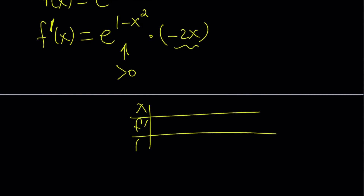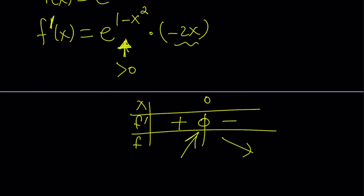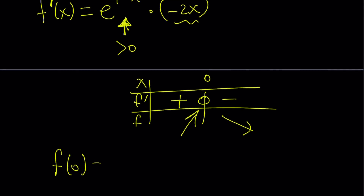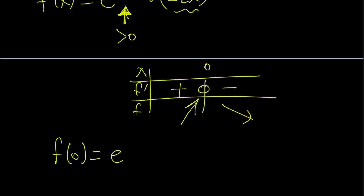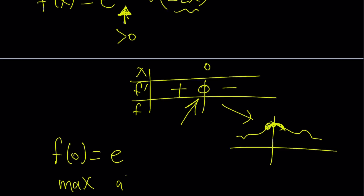Let's make a quick table of x, f prime, and f. Zero is the root of f prime — the exponential part can never equal zero. If x is positive we have a negative derivative, otherwise a positive derivative. So our function is increasing and then decreasing — it's doing different things on different intervals. We can evaluate at 0: f of 0 is e to the power 1, which is e. So at x equals 0, the function passes through e, creating a maximum point at (0, e).